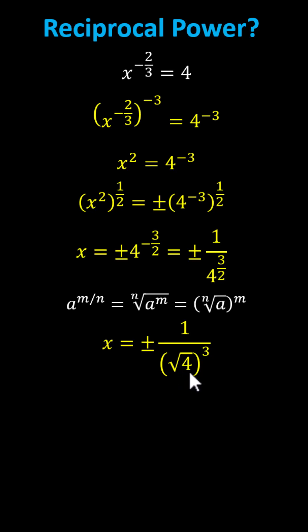The square root of four equals two, two cubed equals eight, giving us x equals plus or minus one-eighth.